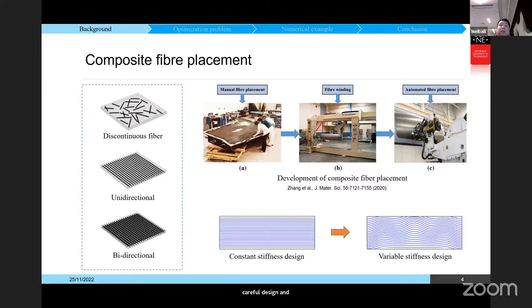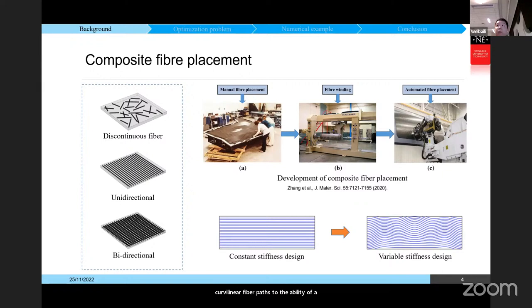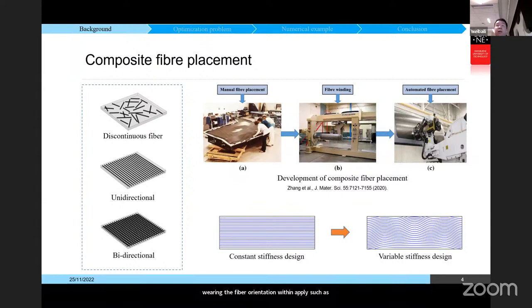The development of manufacturing technologies such as continuous carbon fiber 3D printing and automated fiber placement has made it possible to manufacture composites with curvilinear fiber paths. Variable angle tow placement in laminate structures is an active field of research, motivated by improving performance — such as maximizing stiffness or buckling performance — by spatially varying the fiber orientation within a ply. However, unreasonable placement paths lead to poor quality and consistency of fiber components, so we must address these considerations in design.